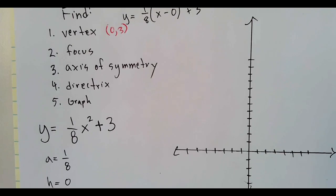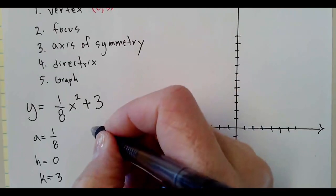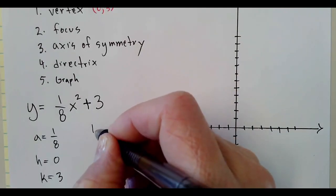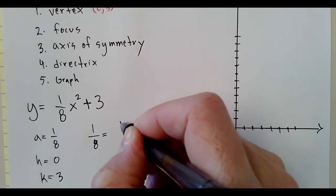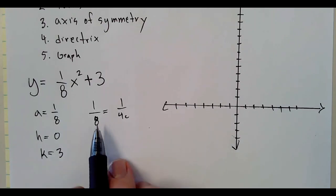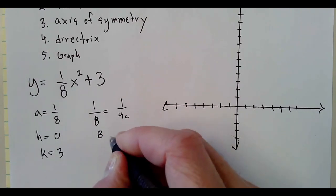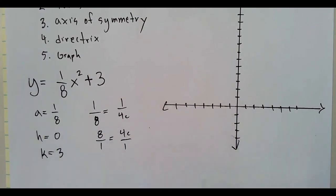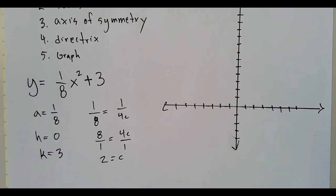So a equals one over four c. Here's a, and that's the same thing as one over four c. I'm going to find c now. If I just take the reciprocal of both of these and flip it over, eight over one equals four c over one. You can totally do that, and you can see eight equals four c. Well then, that means c equals two.